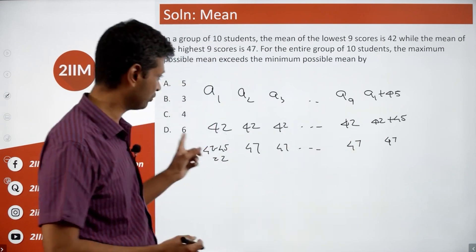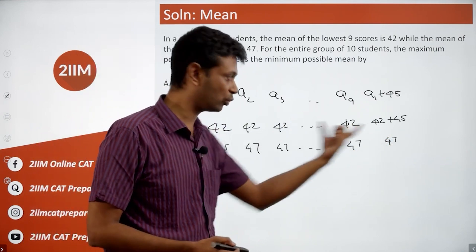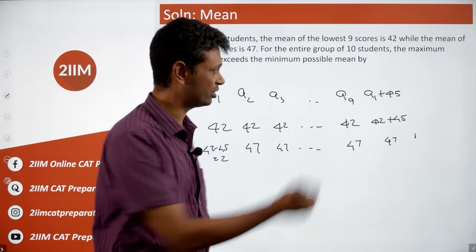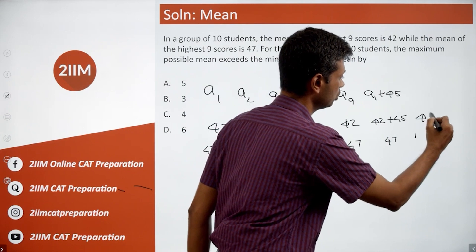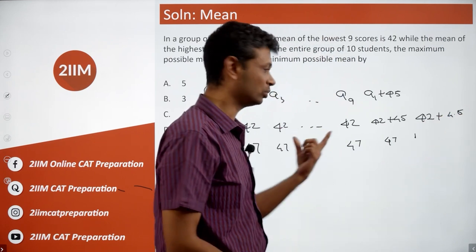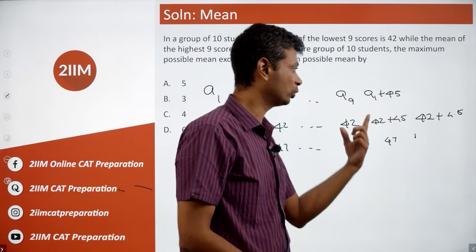Find the mean in the first case: all of these are 42, so they average out to 42, plus this additional 45. That's 45 over 10 instances, so this average is 42 plus 4.5. The total average is 42 plus 4.5, which is 46.5.